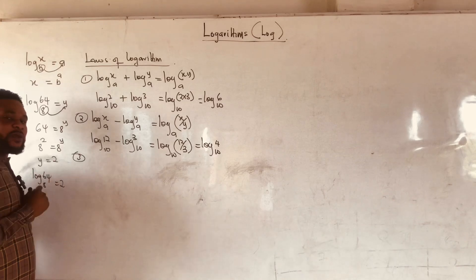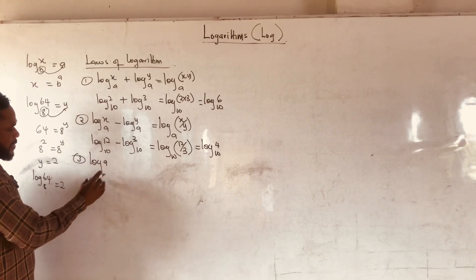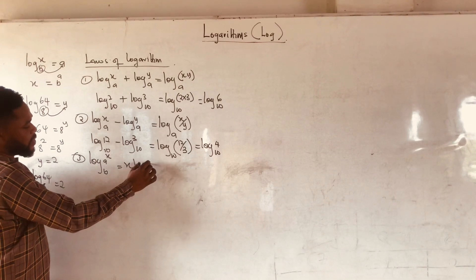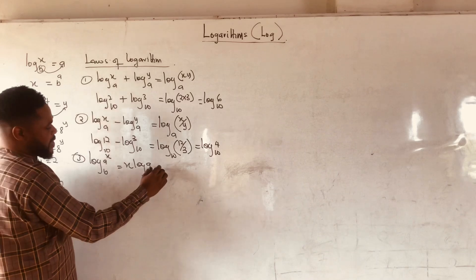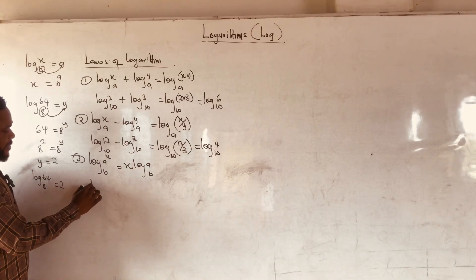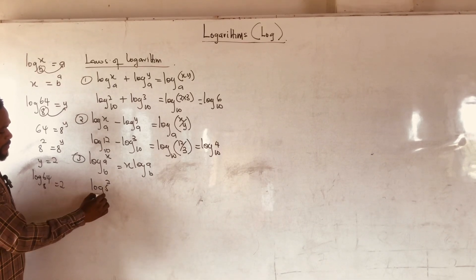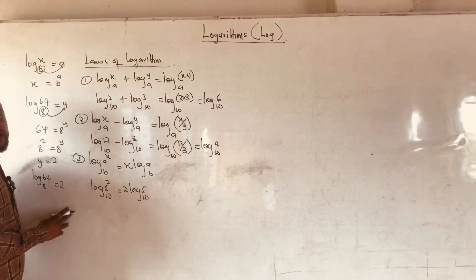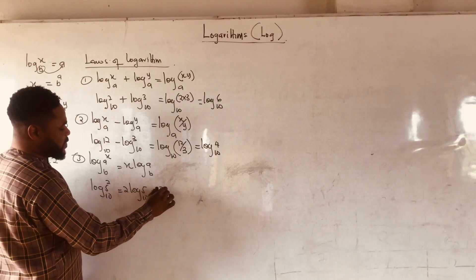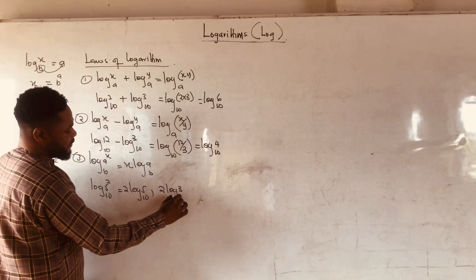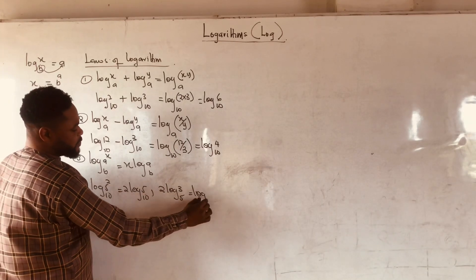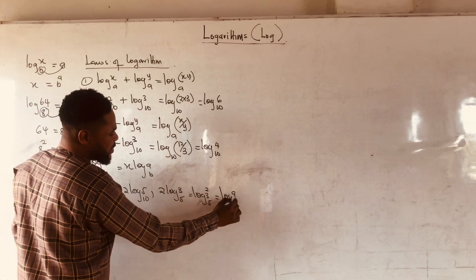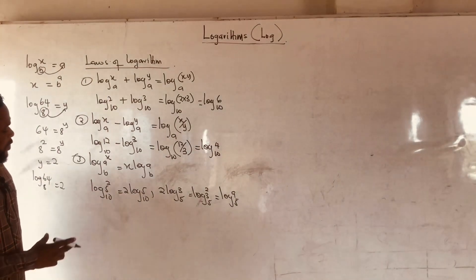Let us look at the third law. If I have log a raised to the power x, base b, it is the same as x log a base b. So an example is log 5 raised to the power 2 base 10, and it is going to give me 2 log 5 base 10. Or I can have 2 log 3 base 5, and this is equivalent to log 3 raised to the power 2 base 5, which simplifies to log 9 base 5. So these are the laws of log.